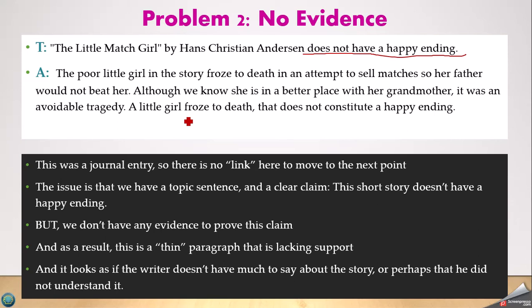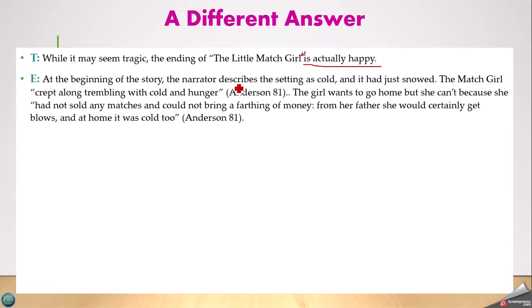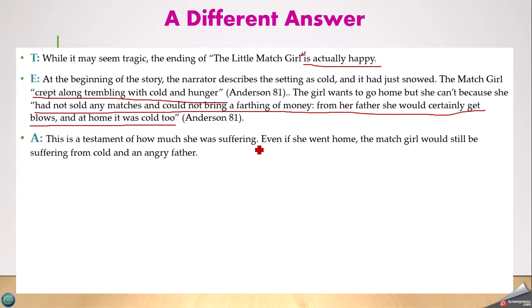The paragraph is thin — four short sentences lacking support with nothing to prove the claim. It looks like the writer either didn't take the time or didn't fully understand the story. We don't revise journal entries, but a different student's paragraph on the same story can show a better example. That student's claim is the opposite: 'While it may seem tragic, the ending of The Little Match Girl is actually happy.' At the beginning of the story, the narrator describes a short quote as evidence — 'trembling with cold and hunger, not sold any matches.'